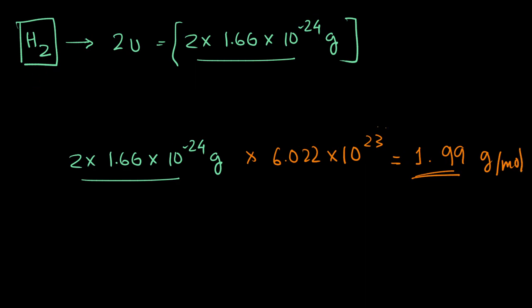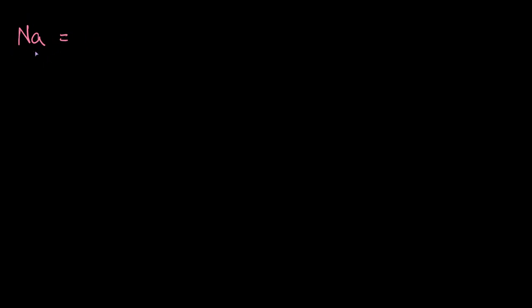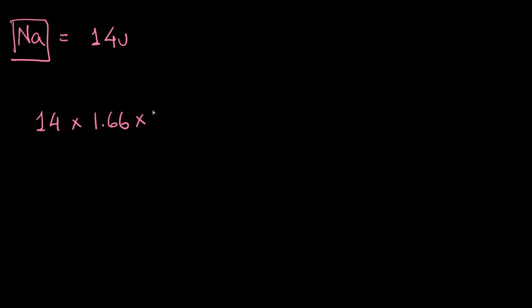Now let us take sodium as another example. Sodium, symbol Na, is a monoatomic element. It has a mass of 14u. So the molar mass of one mole of sodium will be 14 × 1.66 × 10⁻²⁴ grams, multiplied by 6.022 × 10²³.